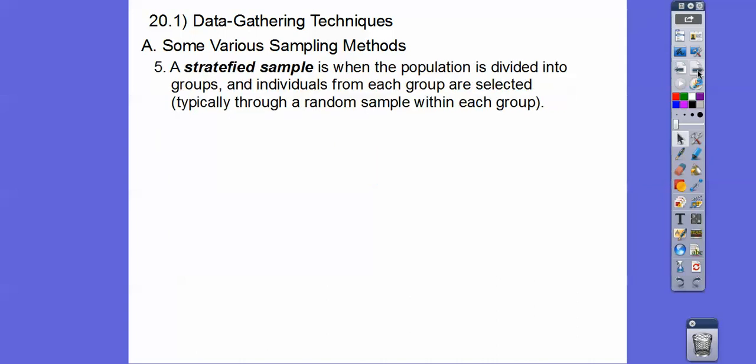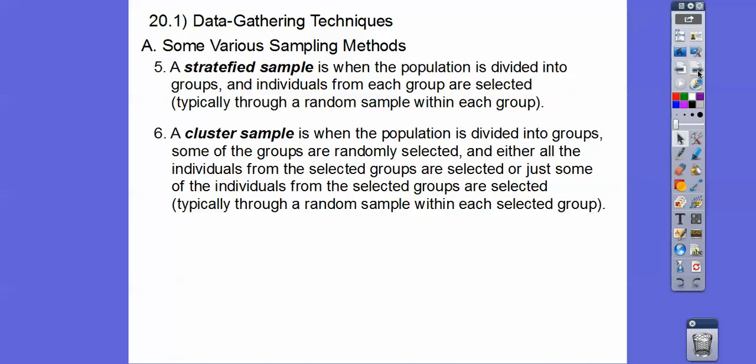So stratified sample is when the population is divided into groups and individuals from each group are selected typically through a random sample within the groups. And then some of the groups are randomly selected and either all of the individuals from the selected groups are selected or just some of the individuals from the selected groups are selected. And this is typically through a random sample within each selected group. So these are pretty close, you guys, except sometimes we take the whole group here.